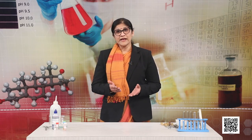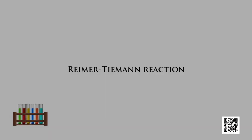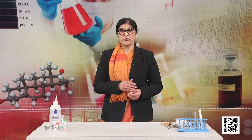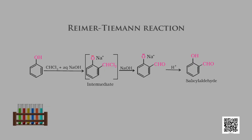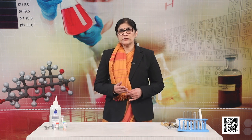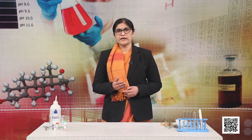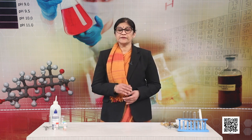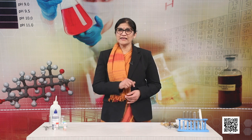Let us see another reaction of phenols: the Reimer-Tiemann reaction, a very important name reaction. On treating phenols with chloroform in the presence of sodium hydroxide, a CHO group (aldehyde group) is introduced at the ortho position of the benzene ring. The intermediate substituted benzyl chloride is hydrolyzed in the presence of alkali to produce salicylaldehyde.